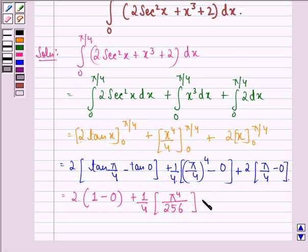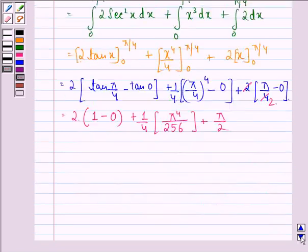Plus pi by 2, because 2 gets cancelled with 4 to give a 2 here. Now we have this, this can be written as 2 plus pi by 2 plus pi raised to power 4 by 1024.